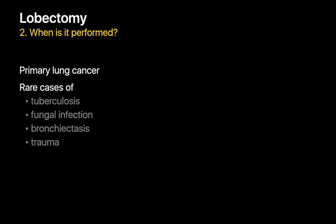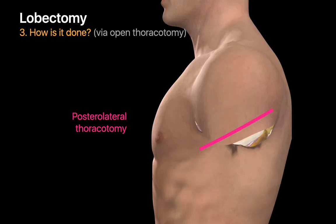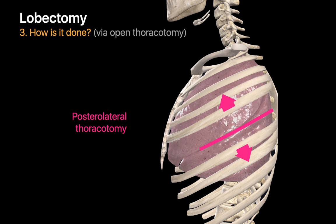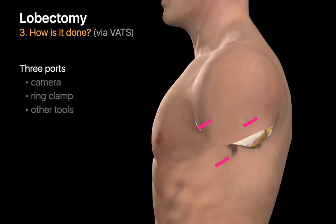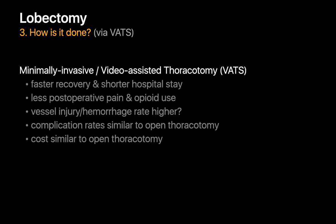Most lobectomies are performed for primary lung cancer, but they are sometimes performed for TB, fungal infection, bronchiectasis, or severe lung trauma. From a mechanical perspective, lobectomies are conceptually similar to pneumonectomies. Two approaches can be used: open thoracotomy via an oblique posterolateral chest wall incision with rib retraction, or video-assisted thoracoscopy (VATS), which involves three small incisions creating ports for a camera, ring clamp, and other tools. Lobectomies performed via VATS result in lower morbidity than open thoracotomy.